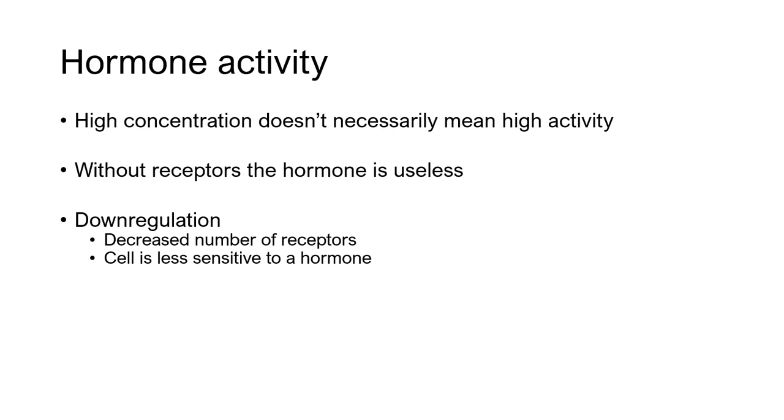And so downregulation, all that means is we're getting rid of receptors. Receptors aren't constantly there. And so the cell can produce more, produce less, that sort of thing. And so if there's a smaller number of receptors, we call this downregulation. As a result, a cell is less sensitive because there won't be as many channels to open by this hormone.